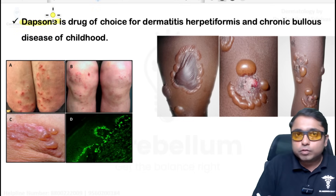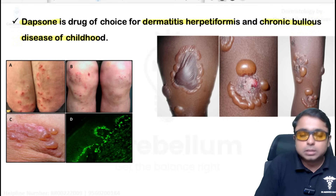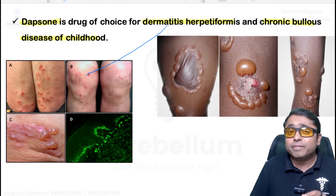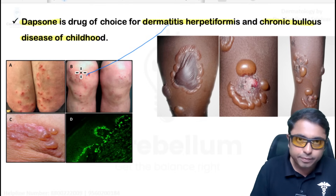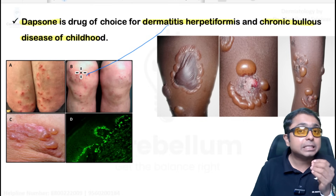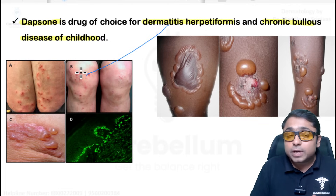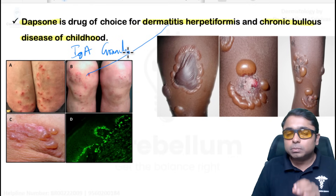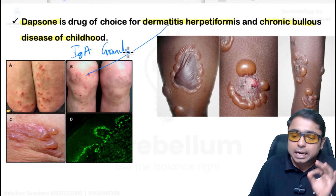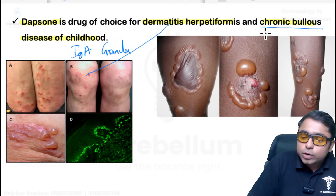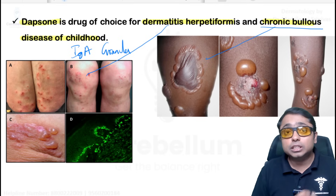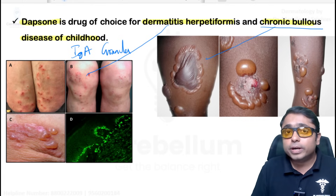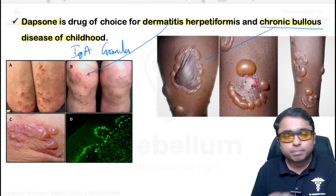Dapsone is the drug of choice for dermatitis herpetiformis and also chronic bullous disease of childhood (CBDC), also called linear IgA bullous dermatosis. In dermatitis herpetiformis, patients present with very itchy papulovesicular lesions on extensor surfaces. Biopsy shows neutrophilic microabscesses in dermal papillae; direct immunofluorescence shows IgA deposition in a granular fashion. It is associated with gluten-sensitive enteropathy (celiac disease). CBDC presents with annular lesions studded with vesicles and bullae — a cluster or crown of jewels appearance — with IgA deposition in a linear fashion along the dermo-epidermal junction.